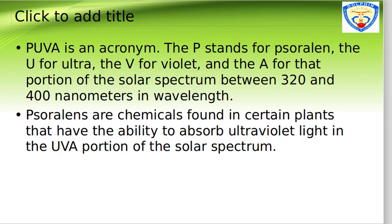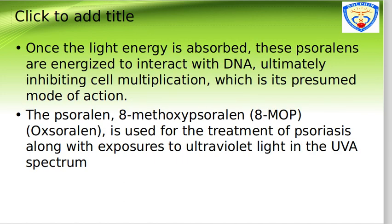Psoralens are chemicals found in certain plants that have the ability to absorb ultraviolet light in the UVA portion of the solar spectrum, basically increasing the sensitivity towards ultraviolet radiations. Once the light energy is absorbed, these psoralens are energized to interact with DNA, ultimately inhibiting cell multiplication, which is the presumed mode of action.